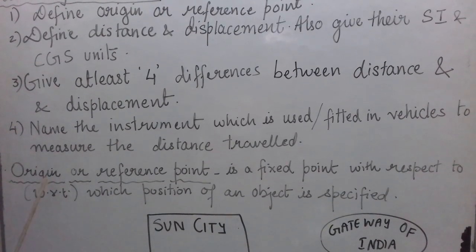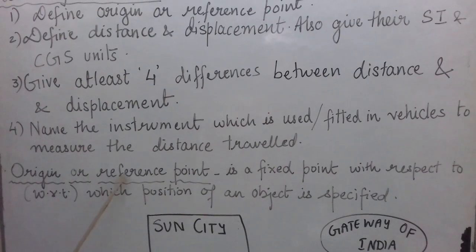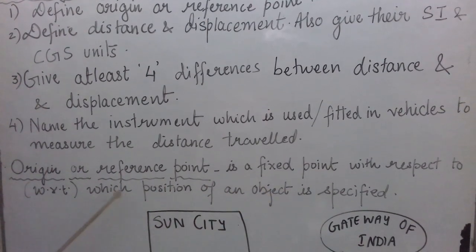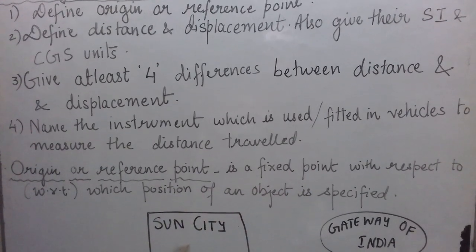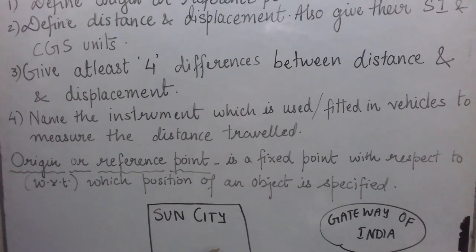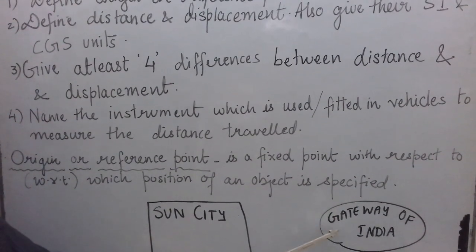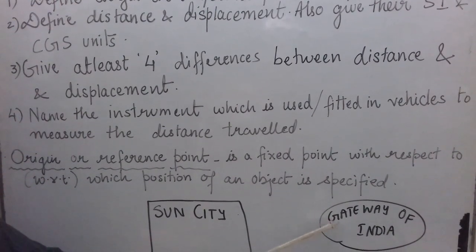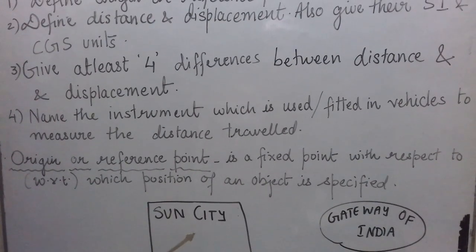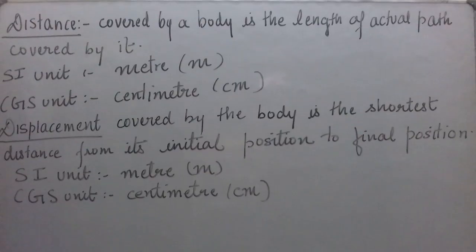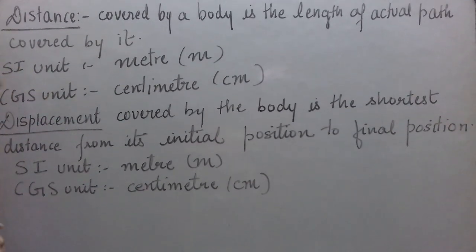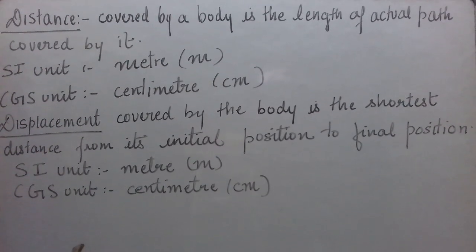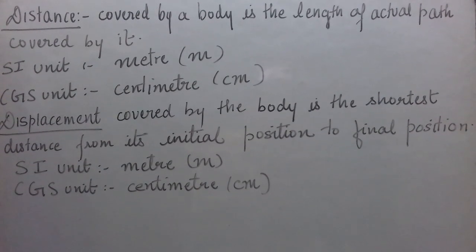So now let us see the definition of origin. Origin or reference point is a fixed point with respect to which the position of an object is specified. In this example, Gateway of India is our origin or reference point because we have chosen it to specify the position of Sun City. Now let us try to achieve our next learning outcome: define distance and displacement and give their SI and CGS units.